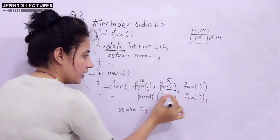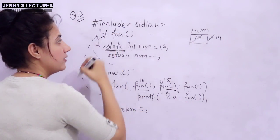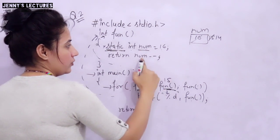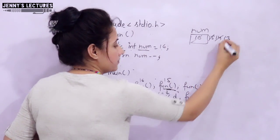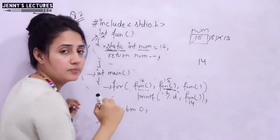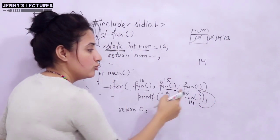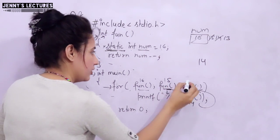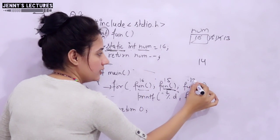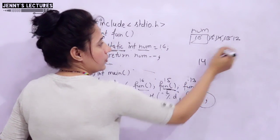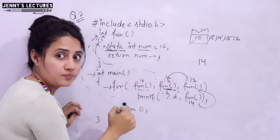Since the condition is true we enter the for loop, and inside we have a printf which calls the function again. The previous value is 14, so 14 is returned and printed, and num becomes 13. Then the update part also calls the function — 13 is returned and num becomes 12. After the update we check the condition again by calling the function, which returns 12 and num becomes 11. 12 is not 0, so the condition is true.